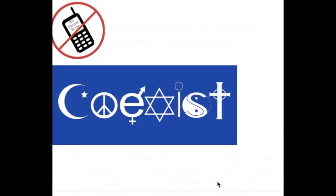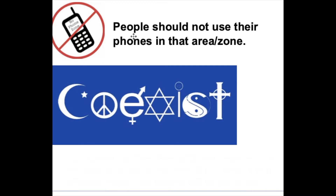Let's take a look at some examples. Here we have a circle over a phone with a slash — it says 'No Phone Zone' and it's crossed out, meaning it's prohibited. The message is: people should not use their phones in that area or zone. Some people have this in restaurants, spas, or anywhere that's meant to be quiet — that's considered a no phone zone.